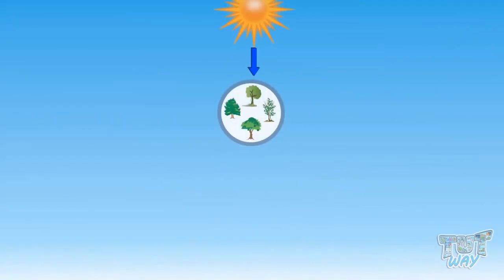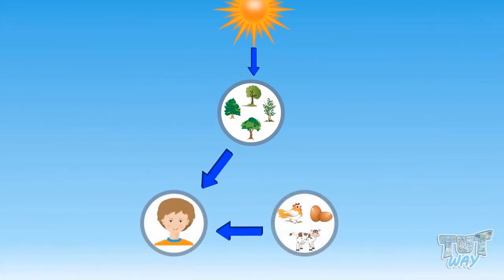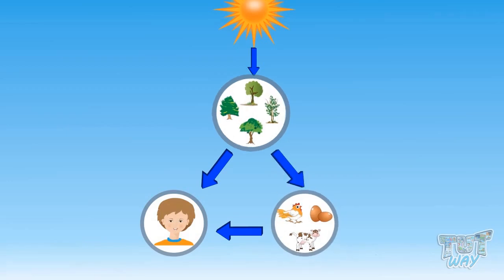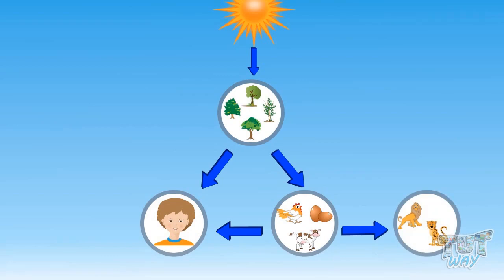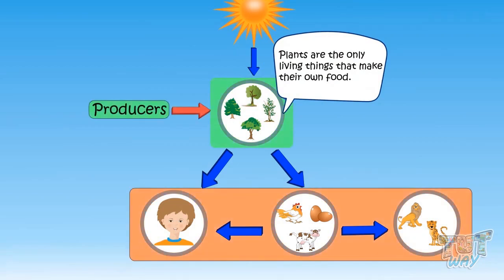Plants are the only living things that produce their own food. We humans get our food from plants or animals. Animals get their food from plants or other animals. But plants are the living organisms that make their own food and are called producers. And all the other living beings are consumers.